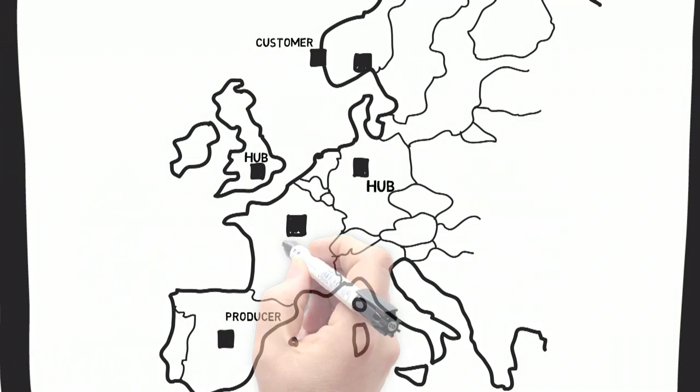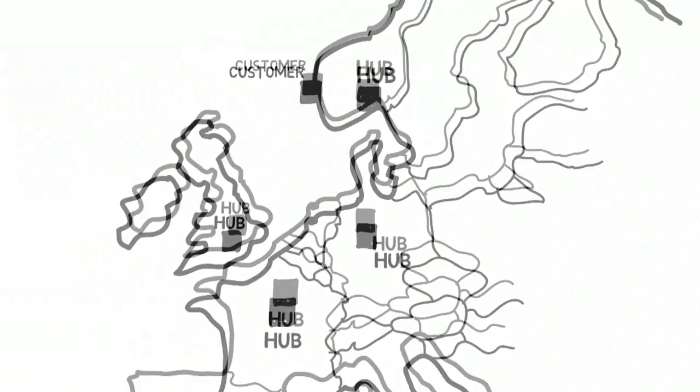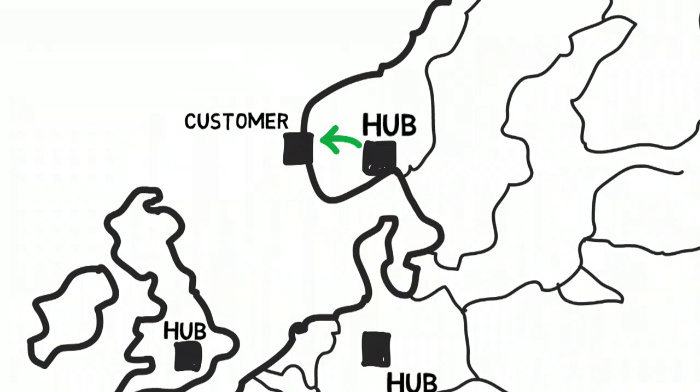Therefore, in this example, through the physical Internet, the wine producer will be able to store wines closer to the point of consumption.